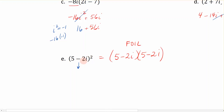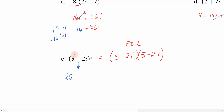We can do this really fast by remembering a sing-song pattern. I'm going to take the first term in the parentheses and square it: the first term squared is 25. Then I'm going to double the product — the product of the two numbers in the parentheses is 5 times negative 2, which is negative 10. Doubling that gives us negative 20i. Then I'm going to square the last term: negative 2i times negative 2i gives us positive 4 i squared.